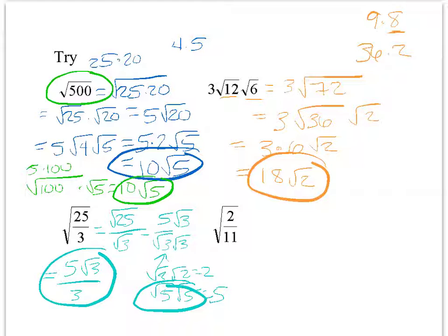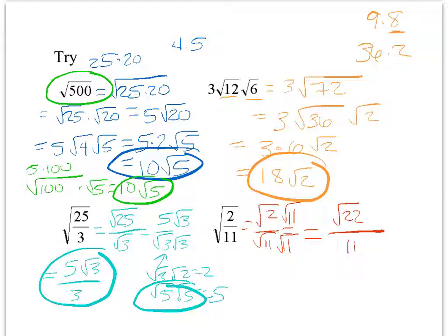Next: the square root of 2/11. Split it into square root of 2 over square root of 11. Neither can be simplified, but there's a square root in the denominator. Rationalize by multiplying by square root of 11 on top and bottom. Top: square root of 2 times square root of 11 is square root of 22. Bottom: 11. Since 22 = 2 times 11 with no perfect squares, the answer is square root of 22 over 11.